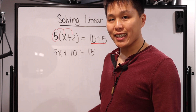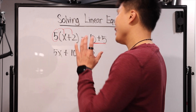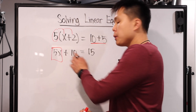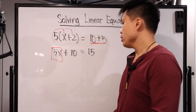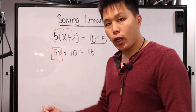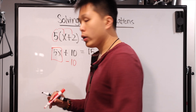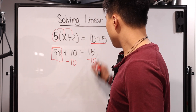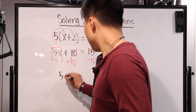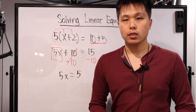Now we move on to step two: adding or subtracting to isolate the variable. The variable is here on the left, and we have this pesky plus 10 on that same side. On the right we just have 15. We want to get rid of the plus 10, so we do the opposite — subtract 10 on one side, and what you do to one side, you must do to the other. This goes away, and we still have 5x. Now 15 minus 10 equals 5. Simple as that.